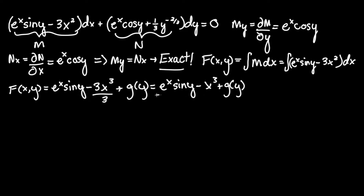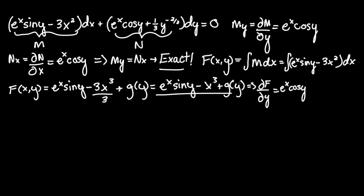Now, since we proved this is an exact equation, let's take the partial derivative of F(x, y) with respect to y. We integrate with respect to x and then differentiate with respect to y to find our remaining constant. So ∂F/∂y equals: the derivative of e to the x sine y is e to the x cosine y. The derivative of negative x cubed with respect to y is zero. Plus g prime of y, since that's just the derivative term.